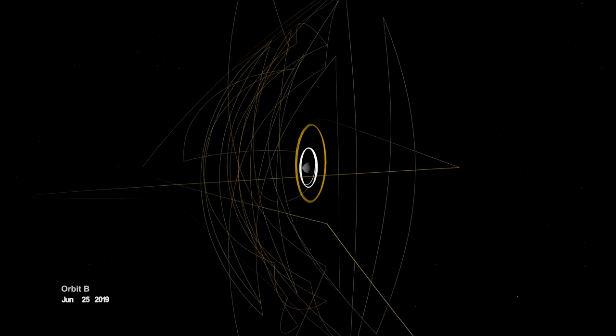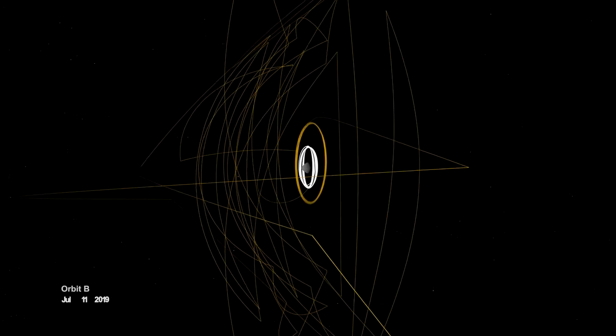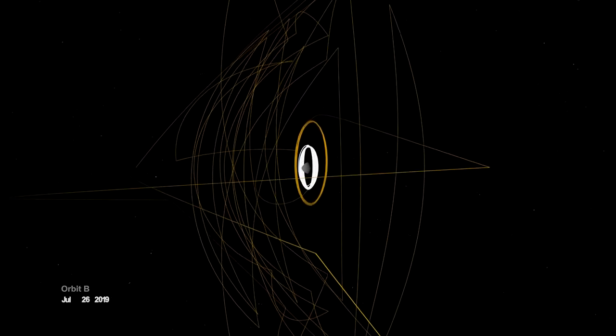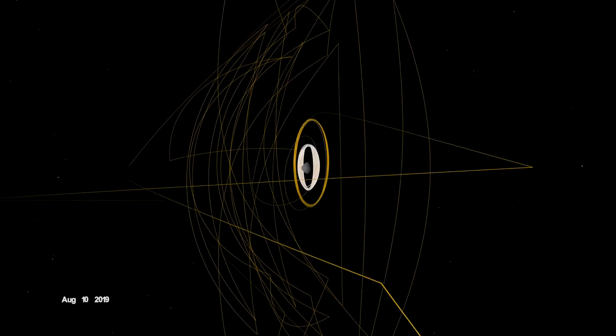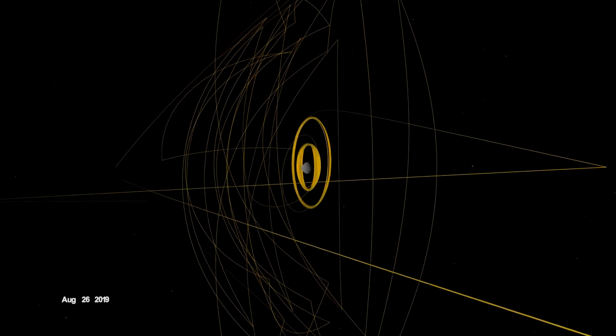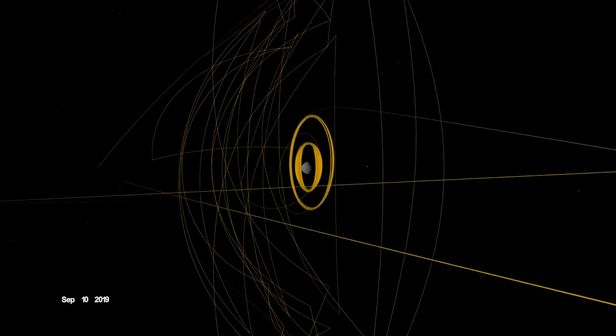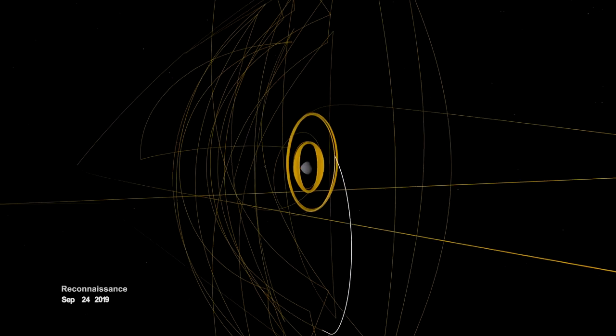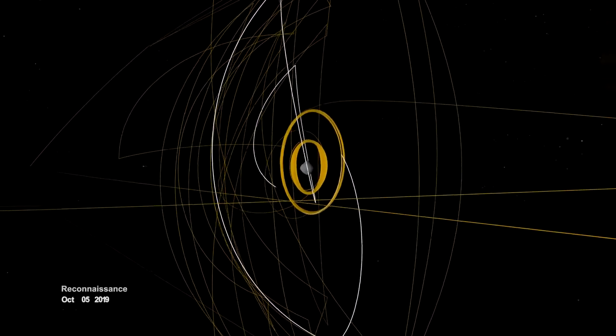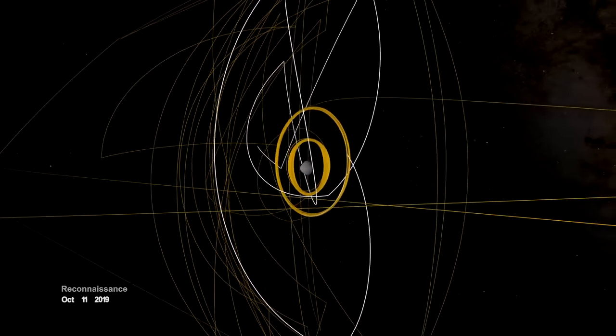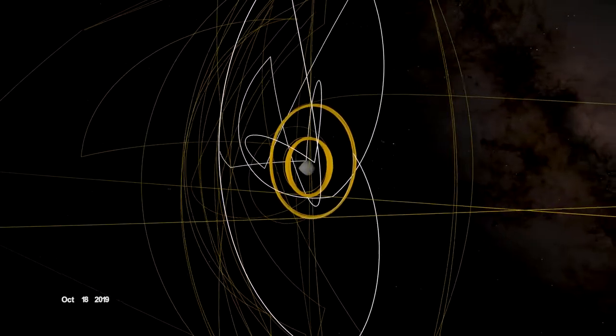On June 12, the spacecraft entered a new orbit at an altitude of just 680 meters, setting another record and establishing a home orbit for the remainder of the mission. In September, it began reconnaissance on four candidate sample collection sites.